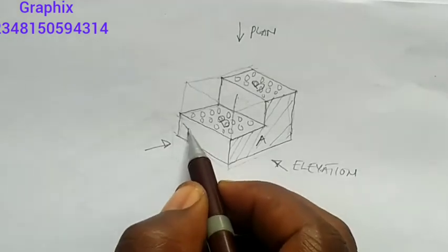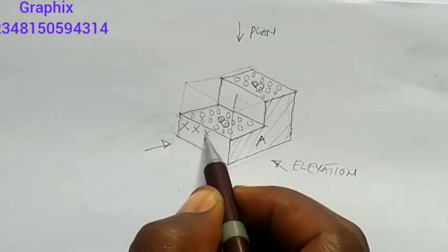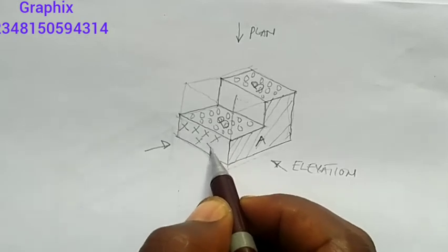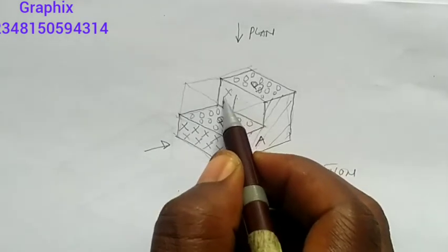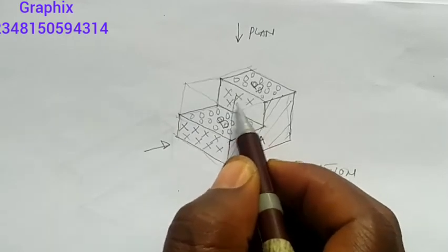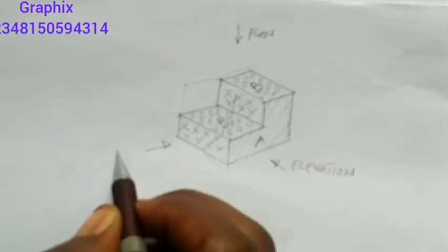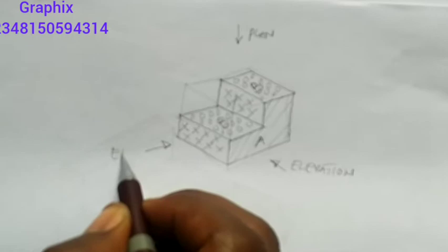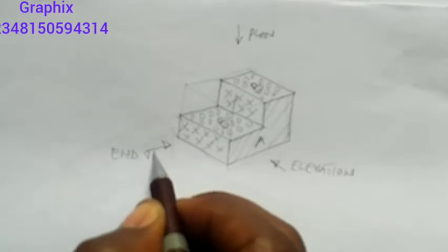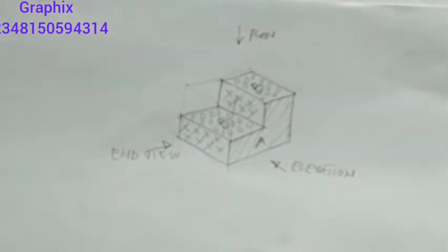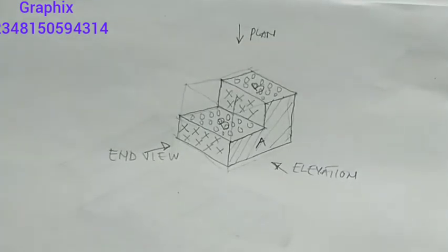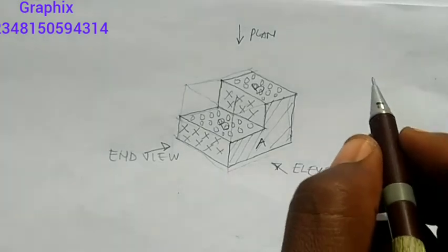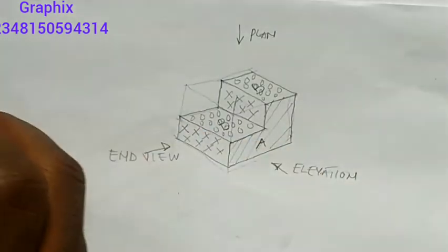Now if you look at this part from here, you see all these parts together. We'll call that the end view, or the end elevation. So we have three views in orthographic projection: the plan, the elevation, and the end view.